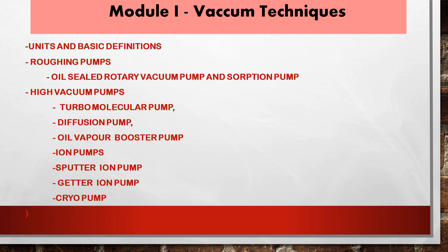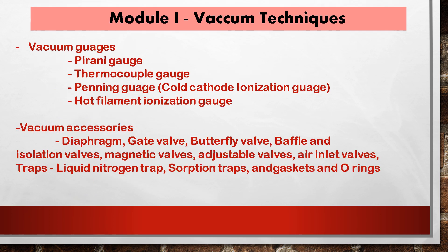Module 1 covers basic definitions, roughing pumps, and high vacuum pumps such as turbomolecular pumps and diffusion pumps. It also covers vacuum gauges — the Pirani gauge, thermocouple gauge, Penning gauge, and hot filament ionization gauge — as well as vacuum accessories such as diaphragm valves, gate valves, butterfly valves, baffle valves, and liquid nitrogen traps.